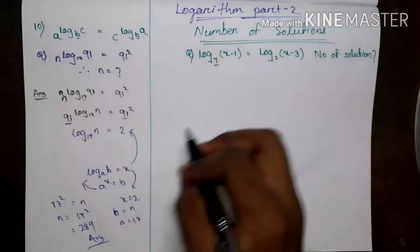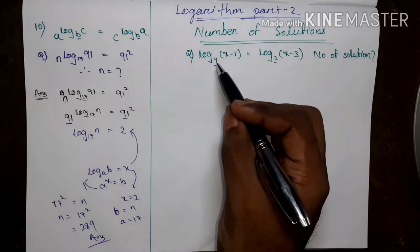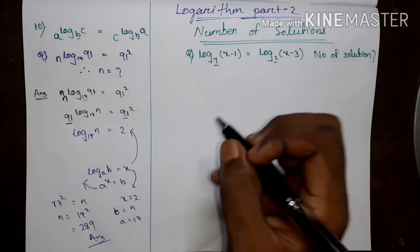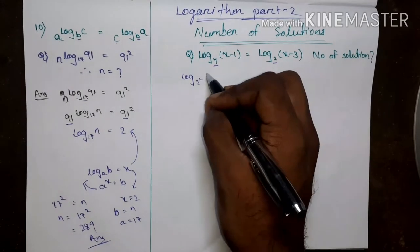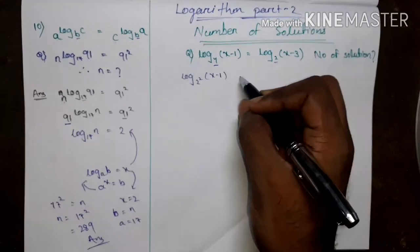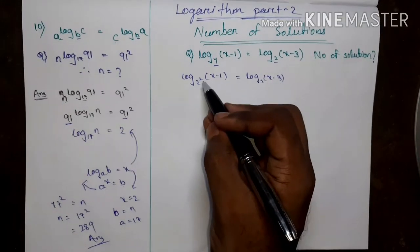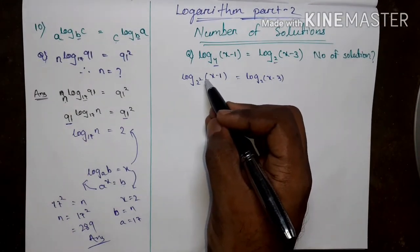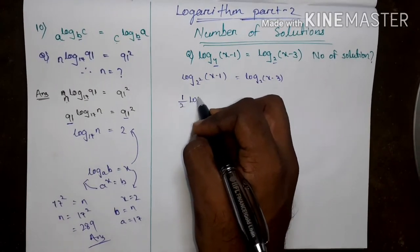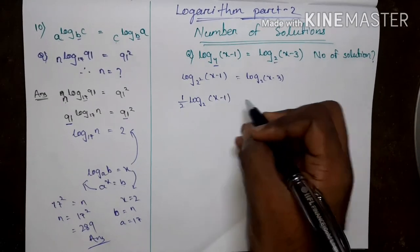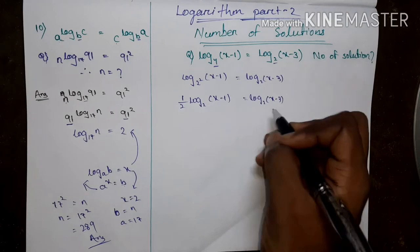Here the base is 4 and here the base is 2. I have to convert base 4 to base 2. I can write 4 as 2 squared, so log_(2²)(x-1) equals log_2(x-3). Then the 2 can come to the front as one half, giving (1/2) log_2(x-1) equals log_2(x-3).